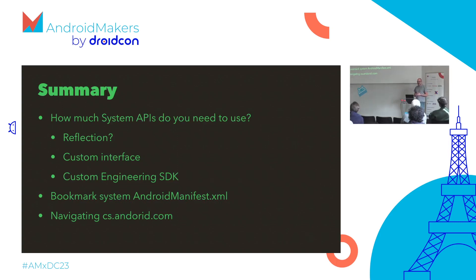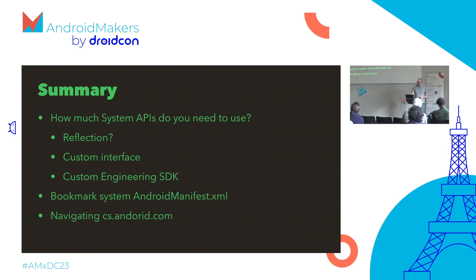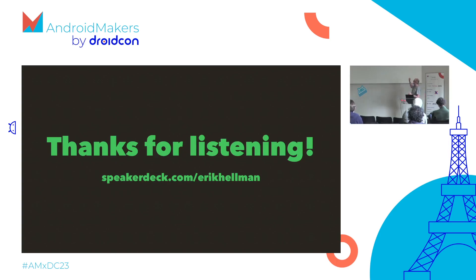We're coming to the end. How much do you need to use system APIs? That decides your approach. If you just need one function call, reflection is fine. If you need a bit more and need performance, use a custom interface. If you're going all in, build the custom engineering SDK. Bookmark the AndroidManifest.xml for the platform and learn how to navigate the code search at cs.android.com. Thank you very much for listening — you can find the slides on SpeakerDeck.